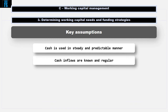The second assumption is that cash inflows are known and regular. A company can know what money is owed to it, but it doesn't necessarily mean they will receive payment when expected. This assumption reduces the reliability of the model for many businesses.